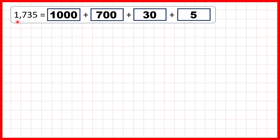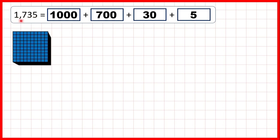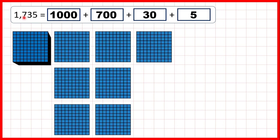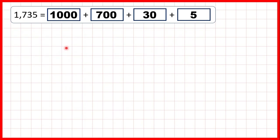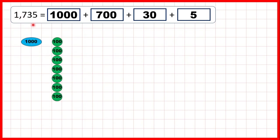Then we have the number 1,735. So that's 1,000, 7 hundreds, 3 tens, and 5 ones. Or using place value counters, we can show 1,000, 7 hundreds, 3 tens, and 5 ones.